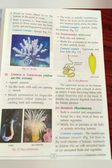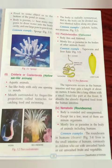Platyhelminthes — flatworms. The body is thin and flattened. They mostly live as parasites in the bodies of other animals. Examples include tapeworm and liver fluke. The tapeworm occurs in the human intestine and may reach a length of about six meters. It looks like a long ribbon with a small head-like part at the front, and it absorbs already-digested food from the human intestine.